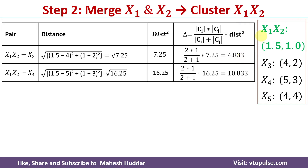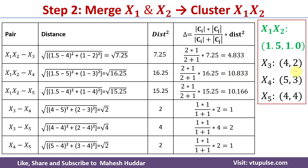For the pair {x1,x2} with x4, we get the Euclidean distance as square root of 16.25 and distance squared as 16.25. Here cardinality of Ci is 2 and cardinality of Cj is 1, and we get the merging cost for this pair as 10.833. Similarly we need to find the merging cost for all the remaining pairs.